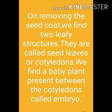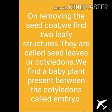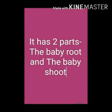On removing the seed coat, we find two leafy structures. They are called seed leaves or cotyledons. When we split them open, we find a baby plant called the embryo. The embryo is present between the cotyledons. This embryo has two parts: the baby root and the baby shoot.